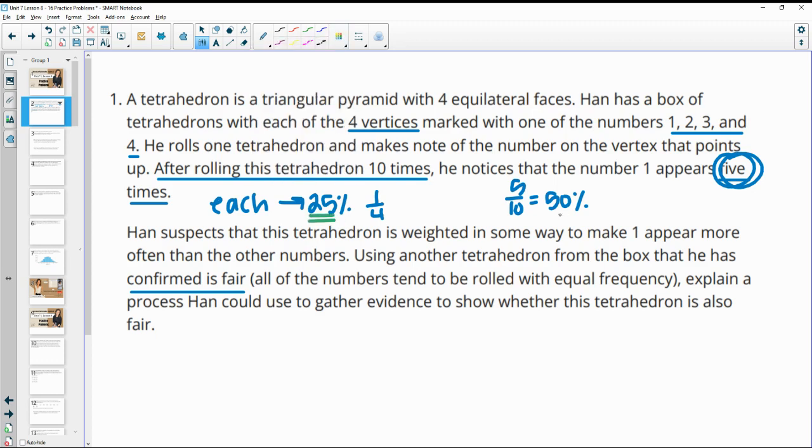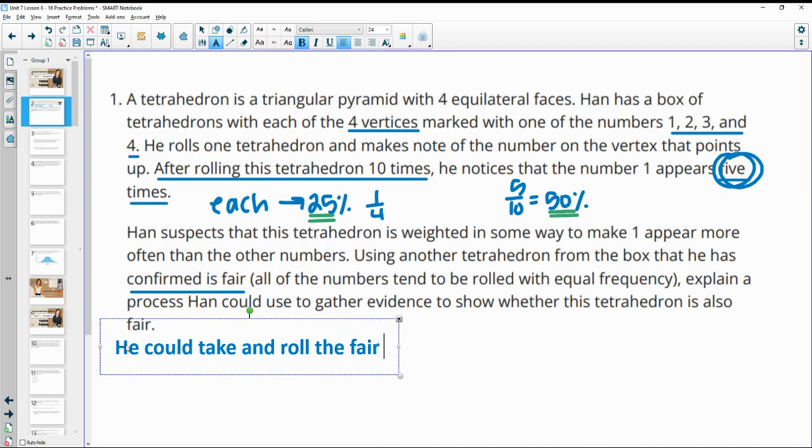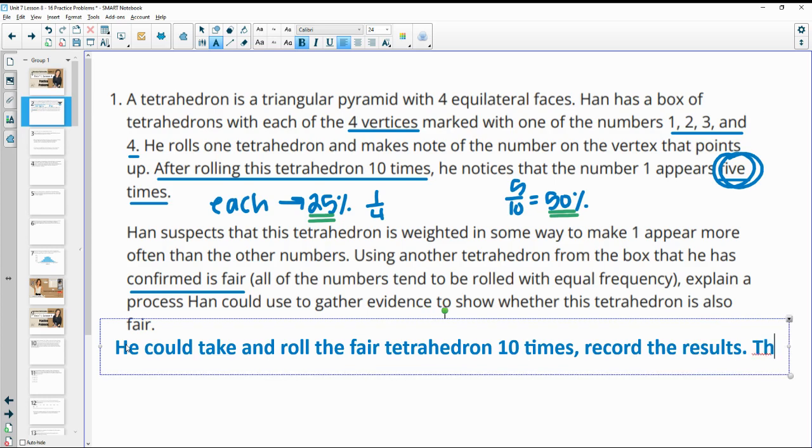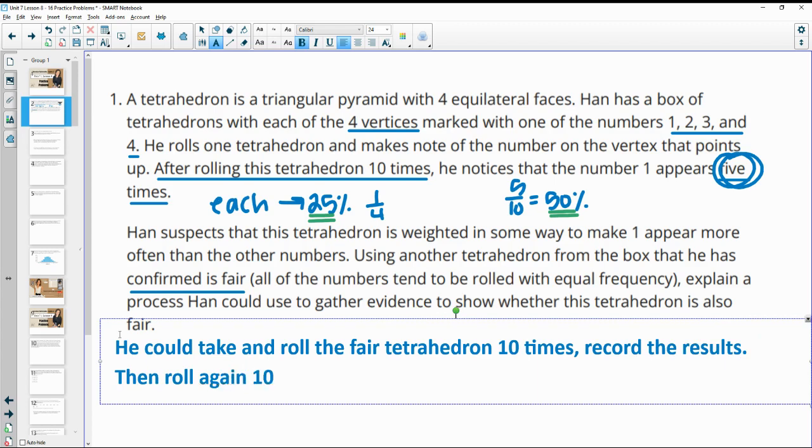Using another tetrahedron from the box that he has confirmed is fair, explain a process that Han could use to gather evidence. He could take and roll a fair tetrahedron 10 times, record the results, then roll again 10 times, record the results, and repeat this multiple times.